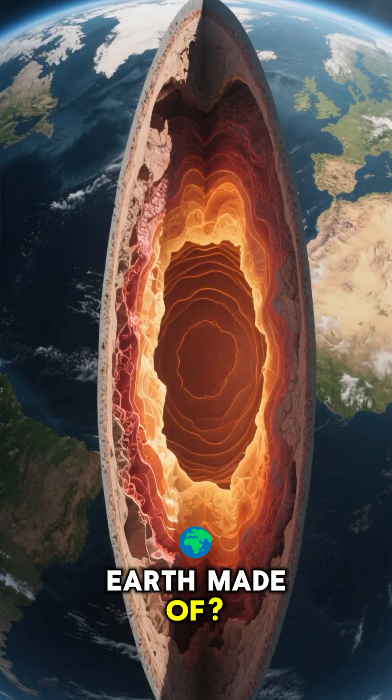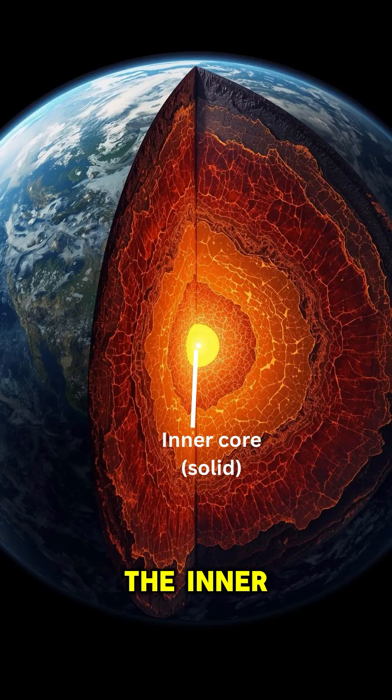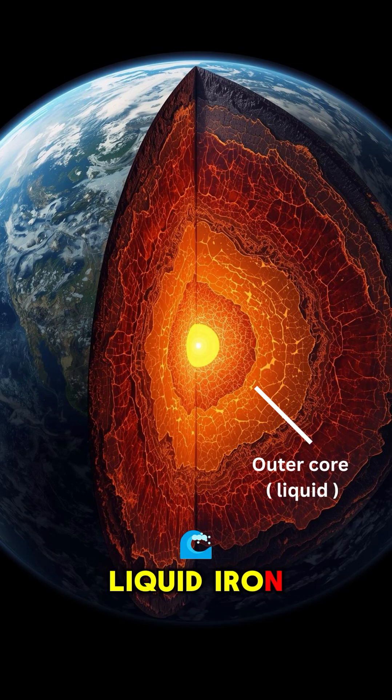So what is the Earth made of? The Earth is actually a giant ball of rock and metal. The inner core is made mostly of solid iron and nickel, but the outer core is liquid iron and nickel.